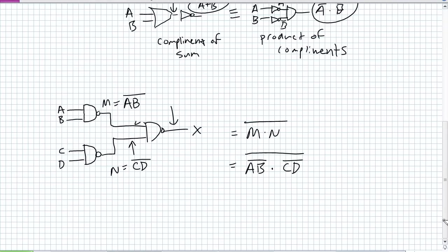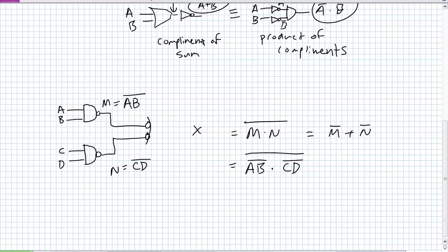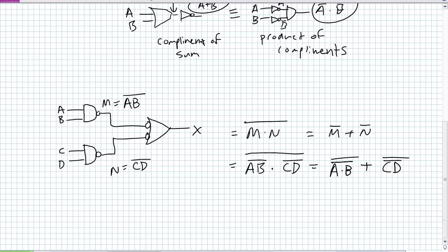These two inputs are M and N. The complement of the product is equal to the sum of the complements. I'm OR-ing the negation of M. What was M? M was A AND B negated — but I'm negating it again. What's NOT N? It's NOT NOT C AND D. What is a double negation via rule nine? It gives you A AND B, or C AND D. That is an SOP expression. Nested NANDs create the SOP expression.